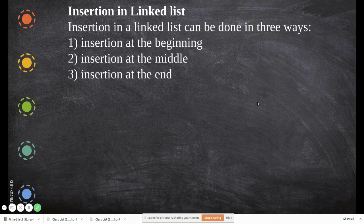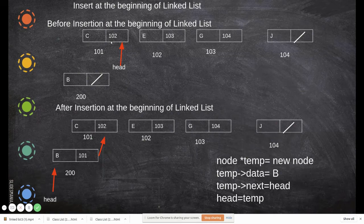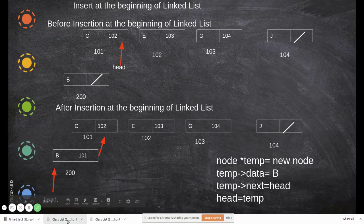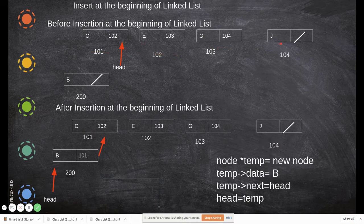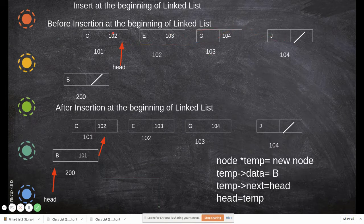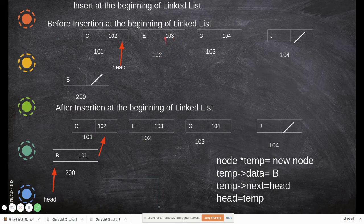First, we are going to see the theory behind insertion at the beginning of the linked list. Imagine these are four nodes available and they are connected as a linked list. Each node has an information field and an address field containing the address of the next node. Using this next field, the pointer moves to that location, reads the data, and moves on till we reach the end, indicated by a null pointer.